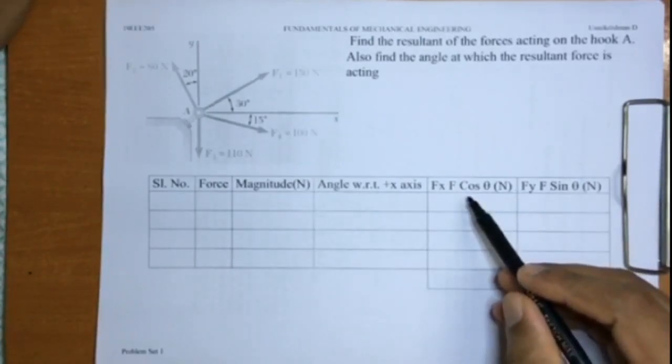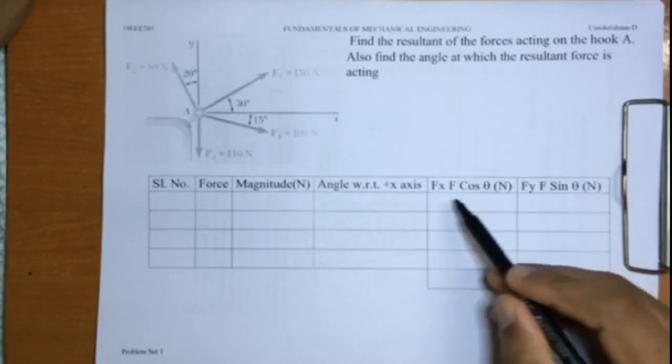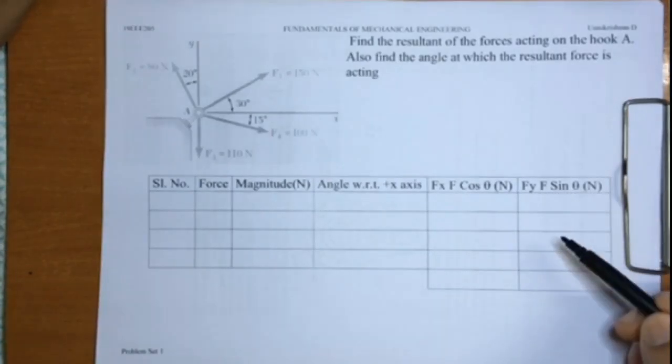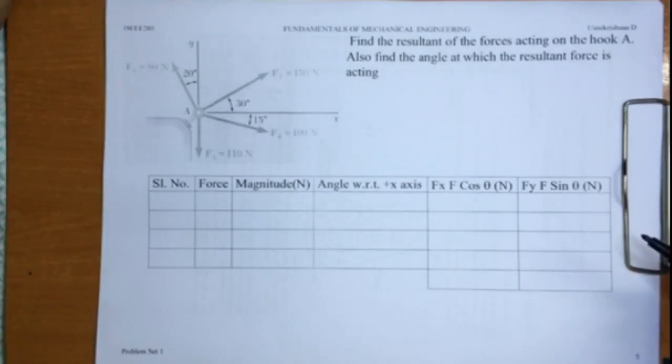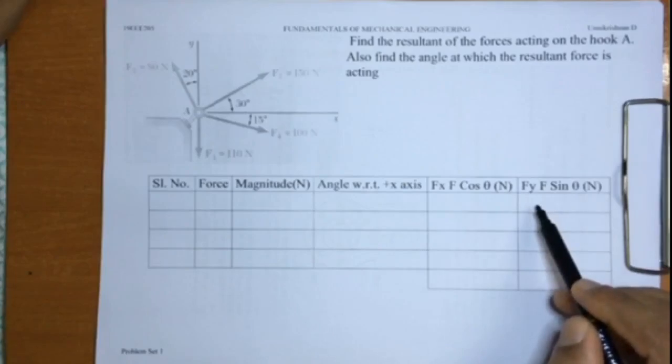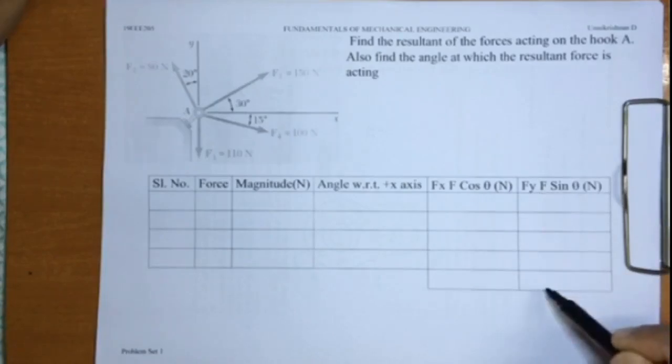To understand this problem, let us make a table like this with serial number, the forces, the magnitude of each force, the angle with respect to x-axis, Fx (that is F cos theta), and Fy (that is F sin theta). This is basically resolving the force into the x and the y component and then adding them separately.